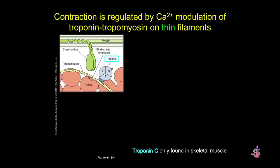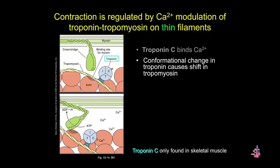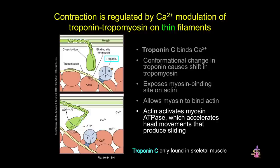In skeletal muscle, contraction is regulated by calcium modulation of that troponin-tropomyosin complex. In this cartoon, you can see again that yellow tropomyosin and the blue troponin complex. When calcium levels rise, troponin C binds to calcium, causing a conformational change that shifts tropomyosin downward, exposing that myosin binding site on actin. The heads of the myosin chains can now swing and bind actin, then actin helps activate the myosin ATPase, which accelerates head movements that produce the sliding motion, allowing myosin to walk along the actin towards the plus ends of actin.